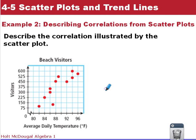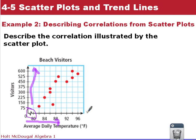Our second example: we want to describe the correlation illustrated by the scatter plot. This one is about people visiting the beach — the average daily temperature versus the number of visitors. Looking at that, it looks like as the average daily temperature increases, the number of visitors is also increasing, so this is going to be a positive correlation. Note the squiggly line on the graph tells us we skipped the first 80 markings — we can do the same thing on our y-axis at times.